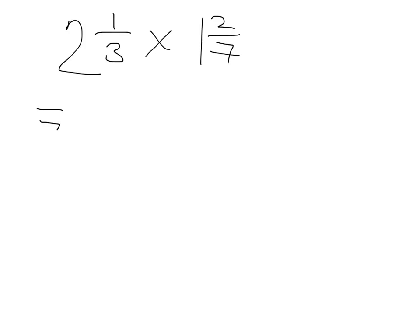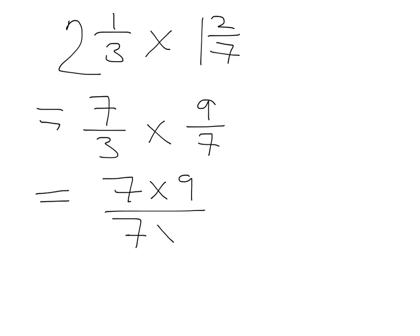You should have got the following. You should have got seven over three. Two threes are six. One is seven. Multiplied by one times seven is seven. Plus two is nine. Nine sevenths.